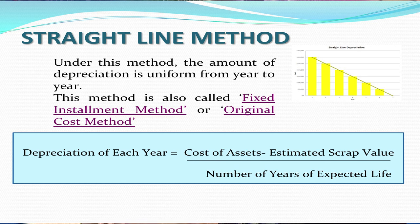Depreciation of each year under the straight line method is calculated as: cost of the asset minus the estimated scrap value, divided by the number of years of the expected useful life of the asset. This amount remains constant and uniform, which is why this method is referred to as the fixed installment or straight line method.